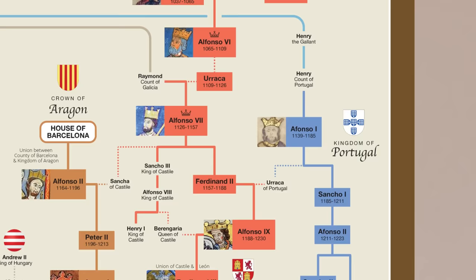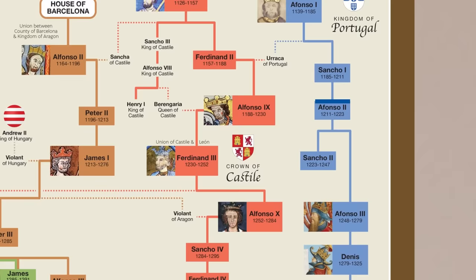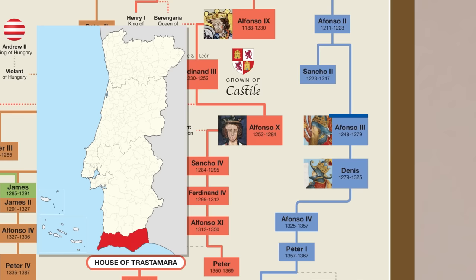Alfonso I was succeeded by a son who built up the new kingdom's administration and its treasury, and then a grandson who devised the first set of Portuguese written laws and got himself excommunicated. He was followed by a very unpopular king, Sancho II, who was deposed and replaced by his younger brother Alfonso III. He conquered the southern region known as the Algarve, and so later kings of Portugal were known as King of Portugal and the Algarve, later Algarves plural.